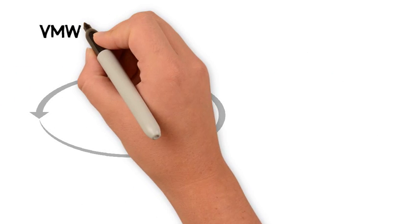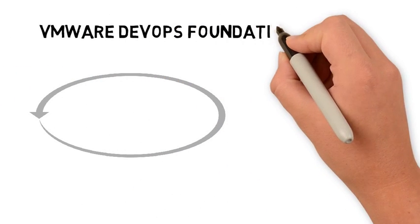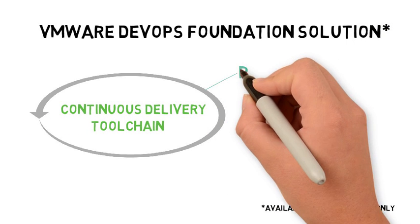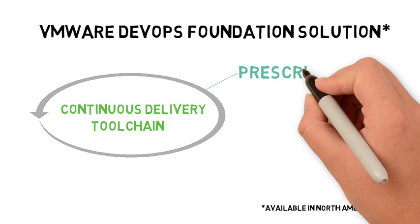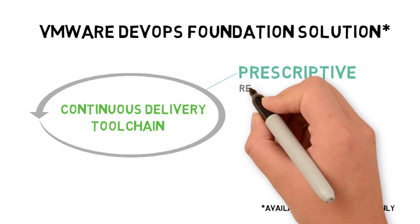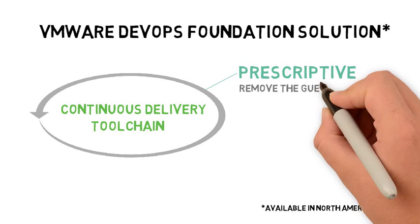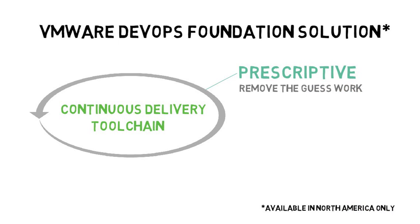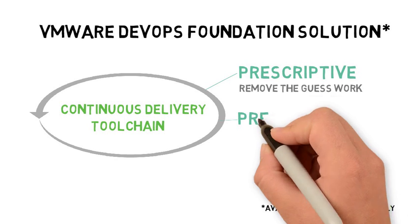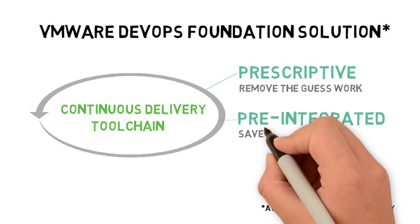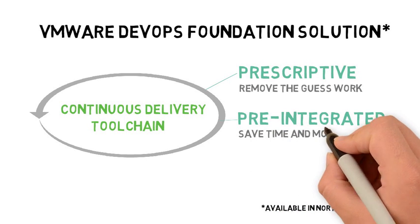VMware's DevOps Foundation solution enables our customers to implement and operate a continuous delivery toolchain with prescriptive stacks of best-of-breed tools based on common industry patterns and your own environment's requirements, whether your apps are developed using C Sharp, Java, Python, Go, or other programming languages. The fact that our stacks are pre-integrated means they are ready to use much more quickly, thereby providing a faster time to value in delivering your applications.